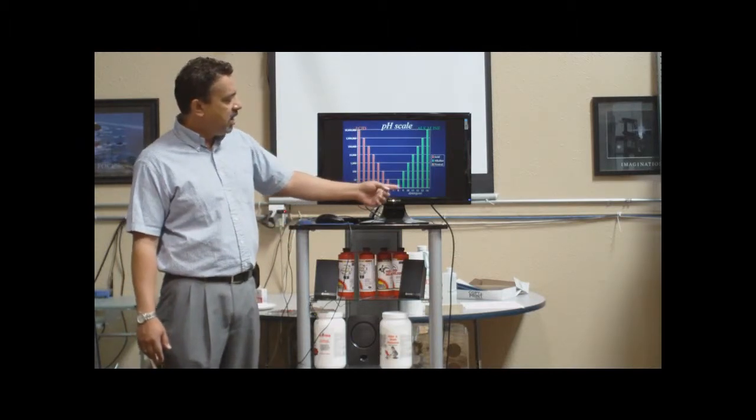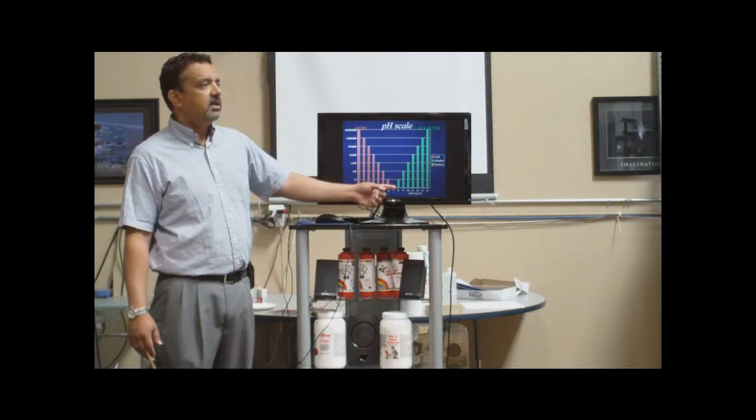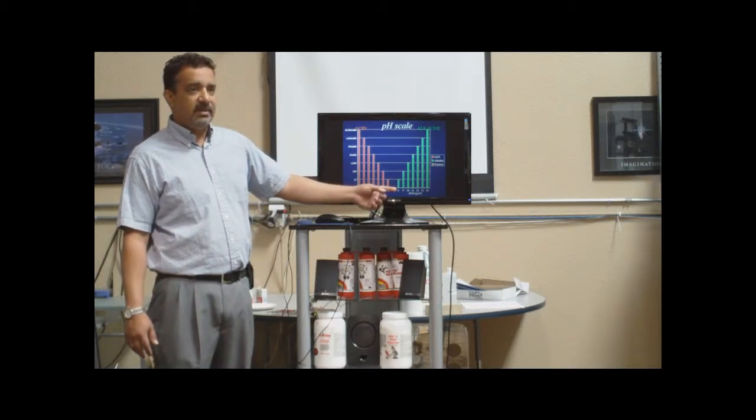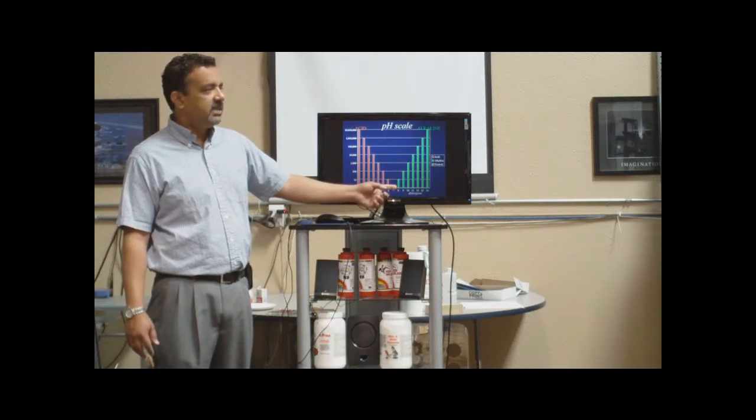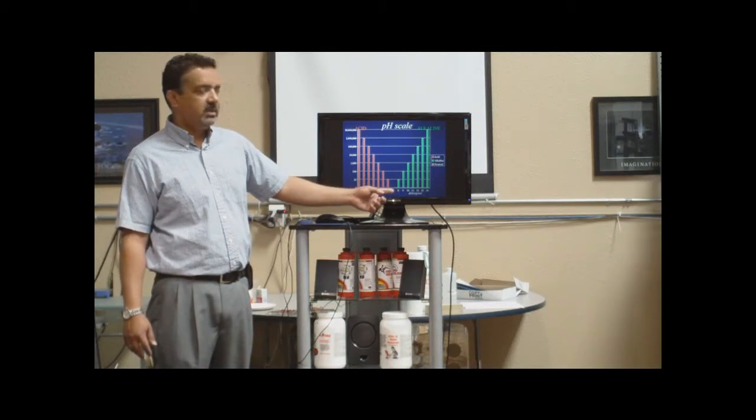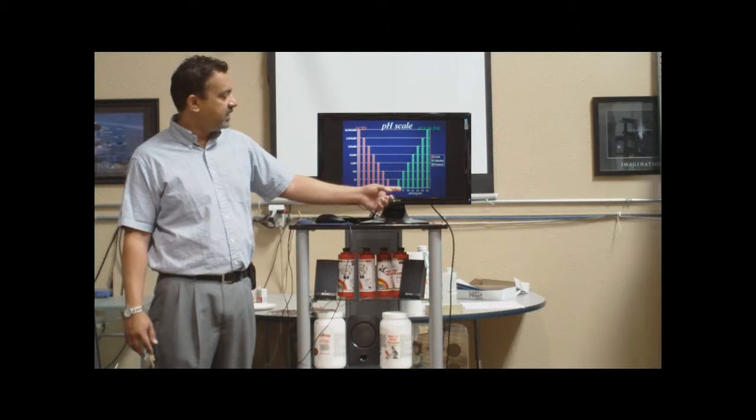Every time you go 1 away, it increases 10 times. So if you go from 7 to 8, it's 10 times more alkaline than the 7. When you go from 8 to 9, it's 100 times more.